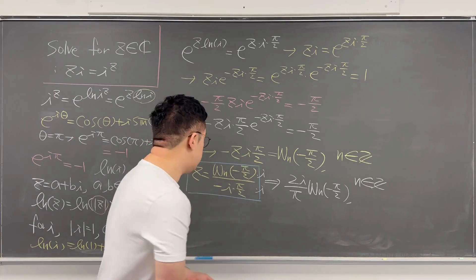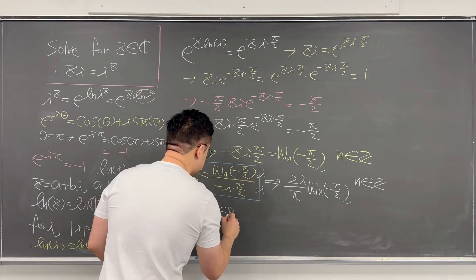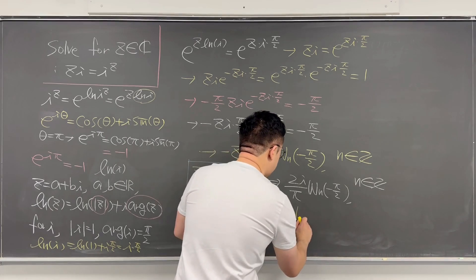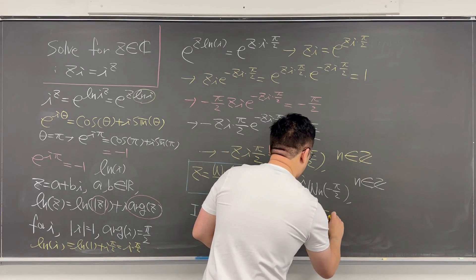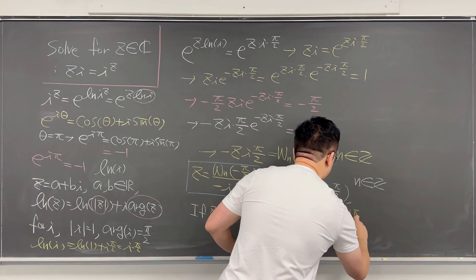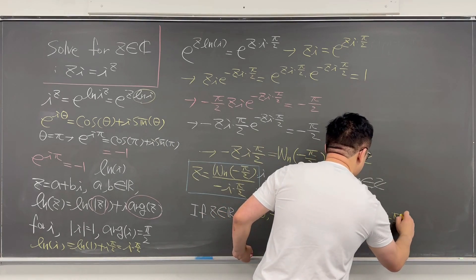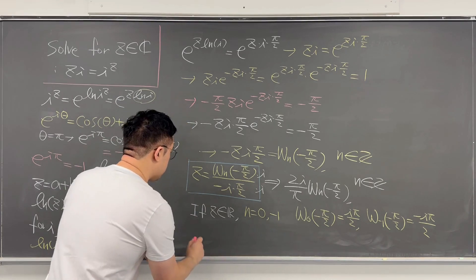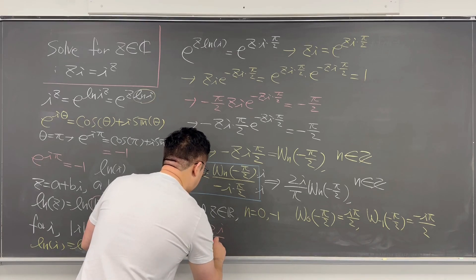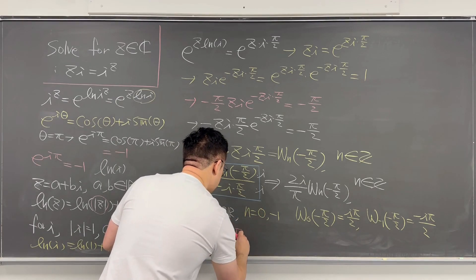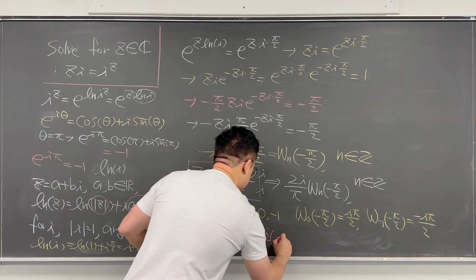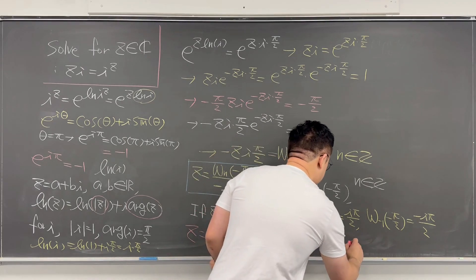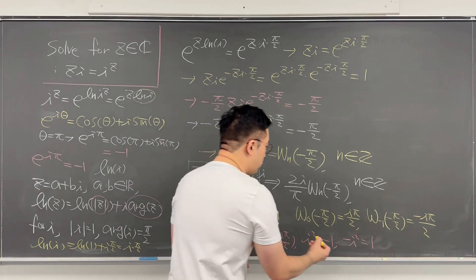If z is only a real solution, we plug in n = 0 and n = negative 1. Lambert W_0 of negative pi/2 equals i*pi/2, and Lambert W_{-1} of negative pi/2 equals negative i*pi/2. So z equals 2i/pi times i*pi/2, which gives i squared = negative 1, and z equals 2i/pi times negative i*pi/2, which gives negative i squared = positive 1. So plus and minus 1 are the real solutions.